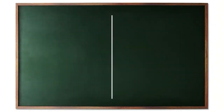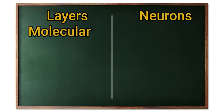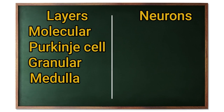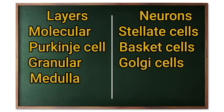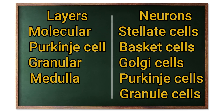During the next section we'll be discussing four layers and five different types of neuron. The four layers are the molecular layer, the Purkinje cell layer, the granular layer, and the white matter medulla. The five types of neuron are stellate cells, basket cells, Golgi cells, Purkinje cells, and granule cells. So just keep those in your head or pause the video and write them down before the explanation.